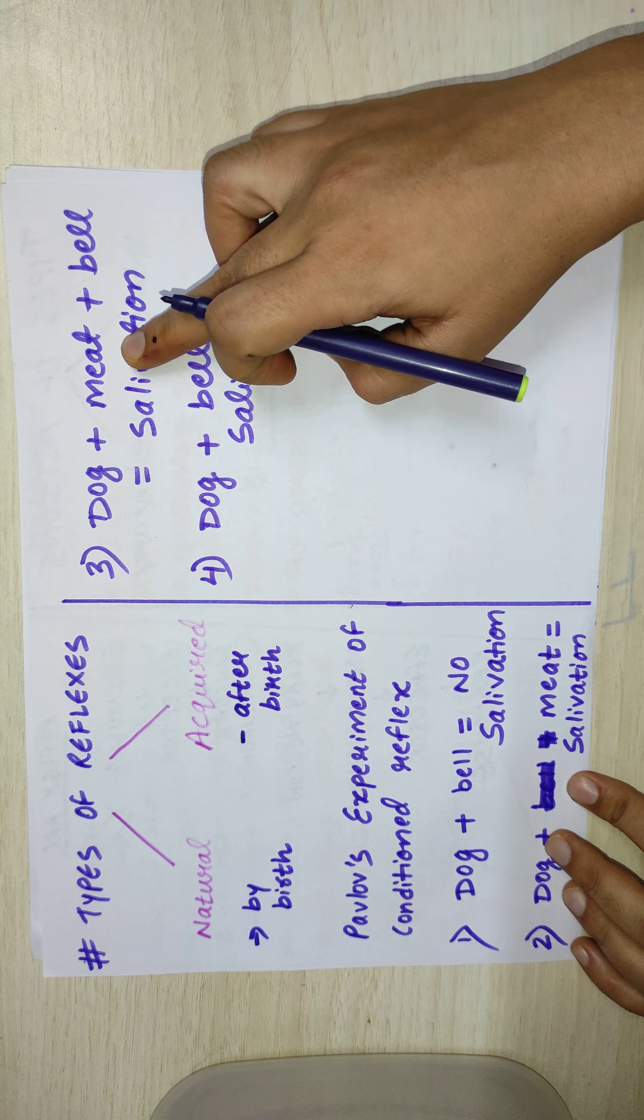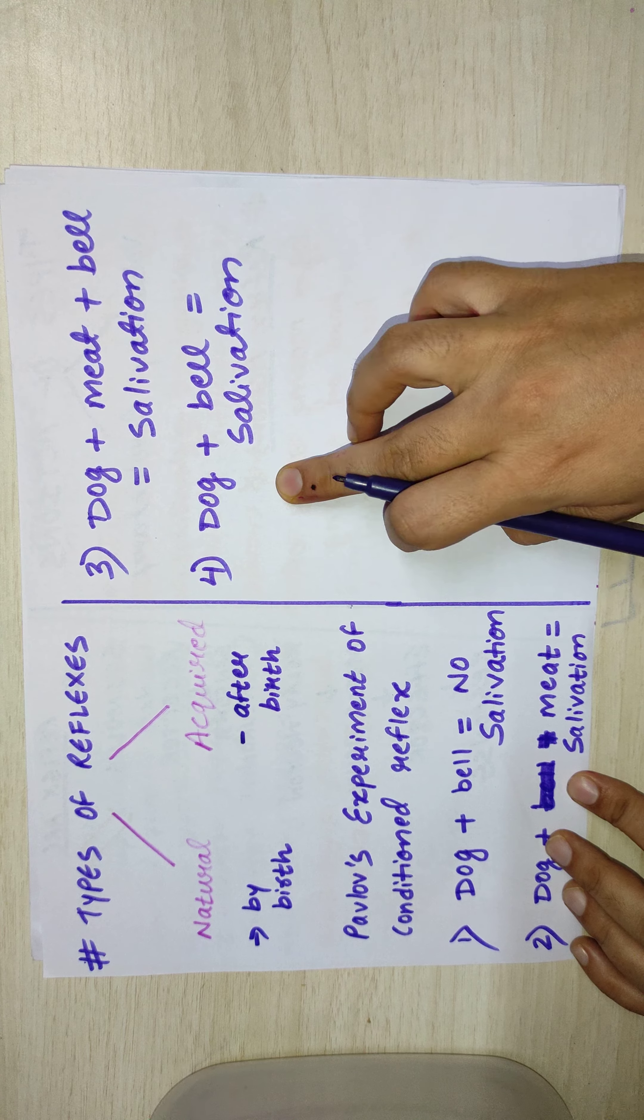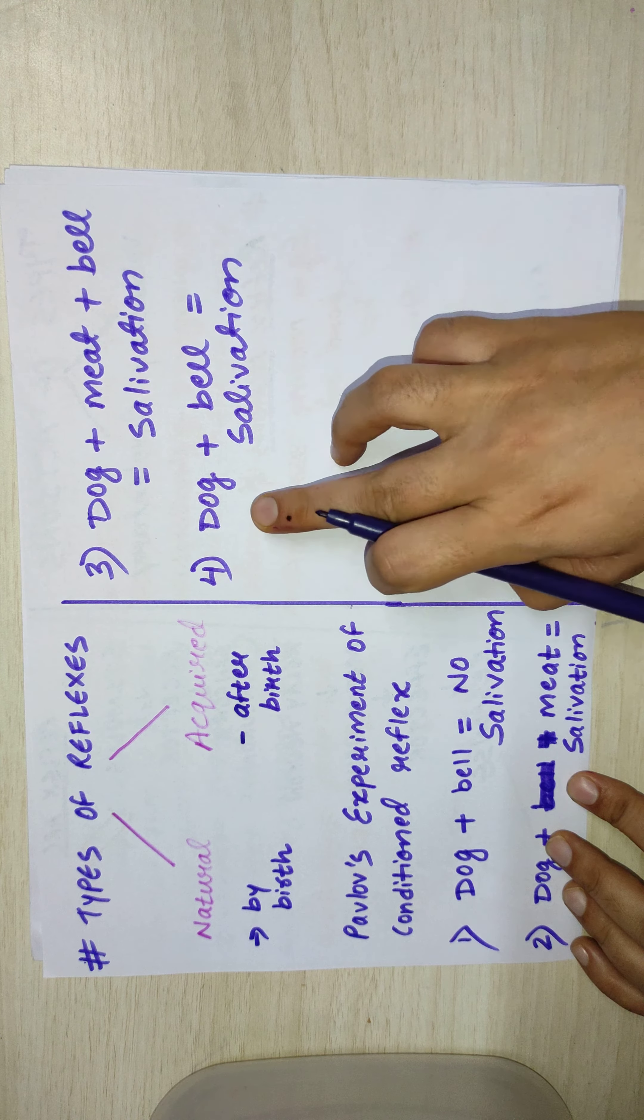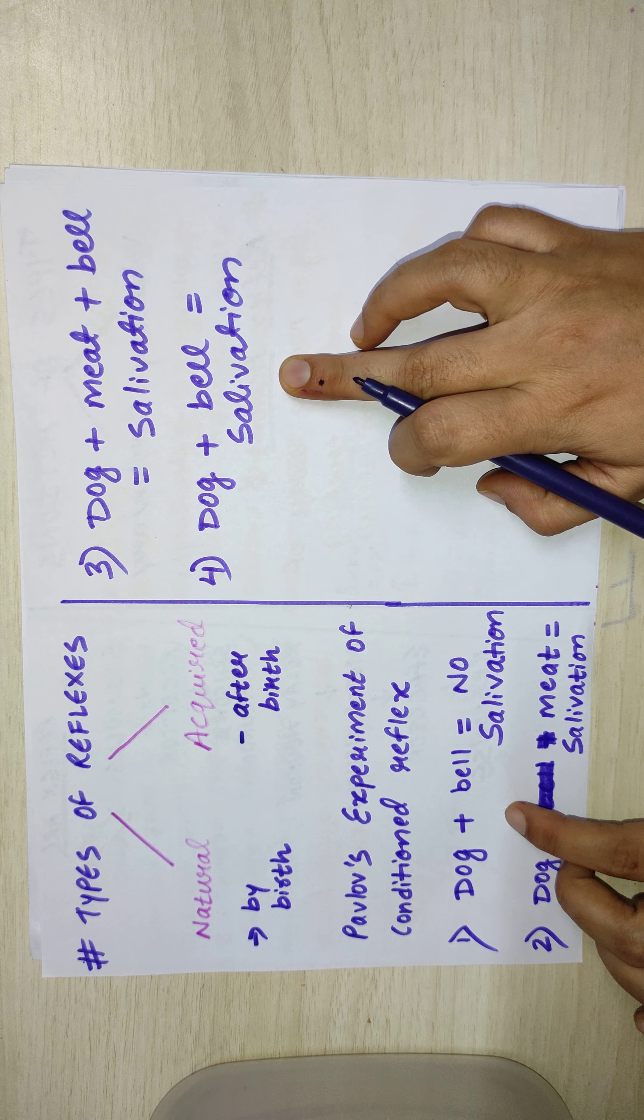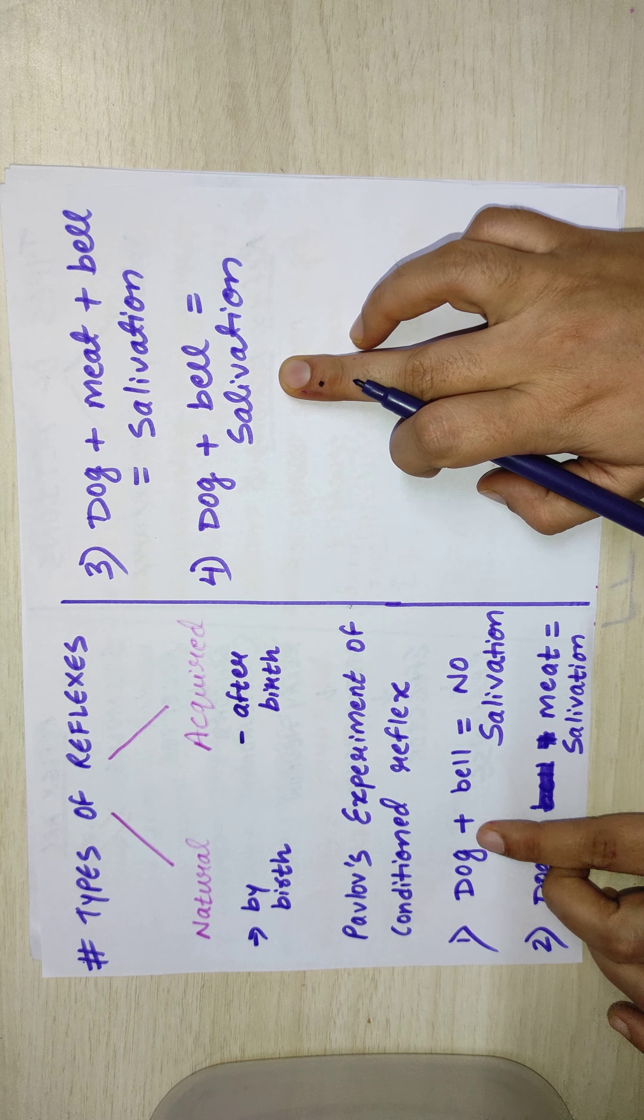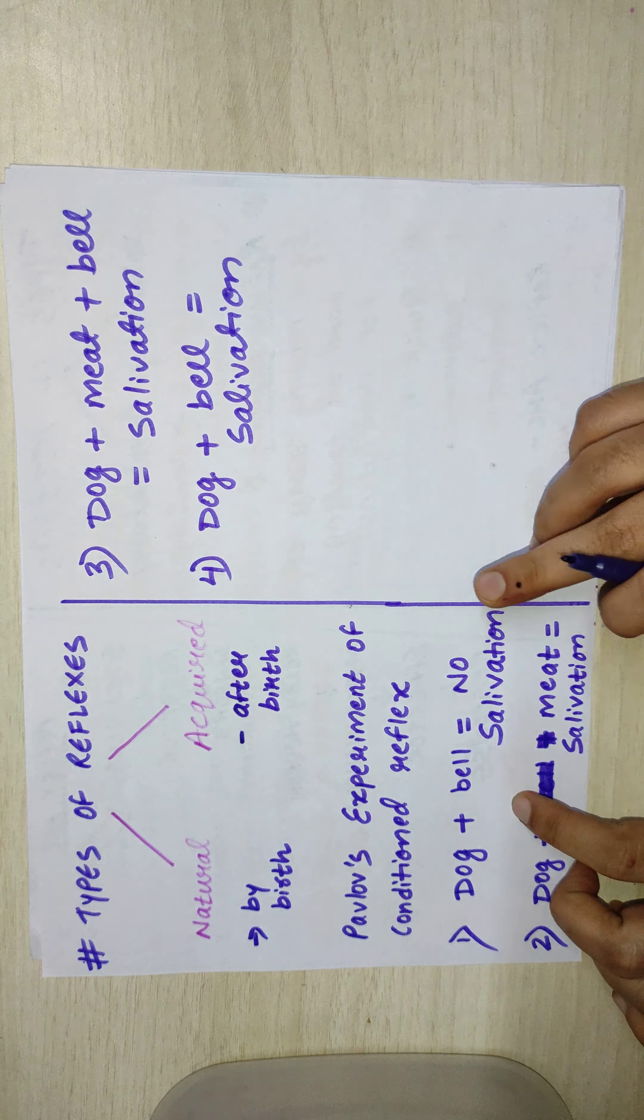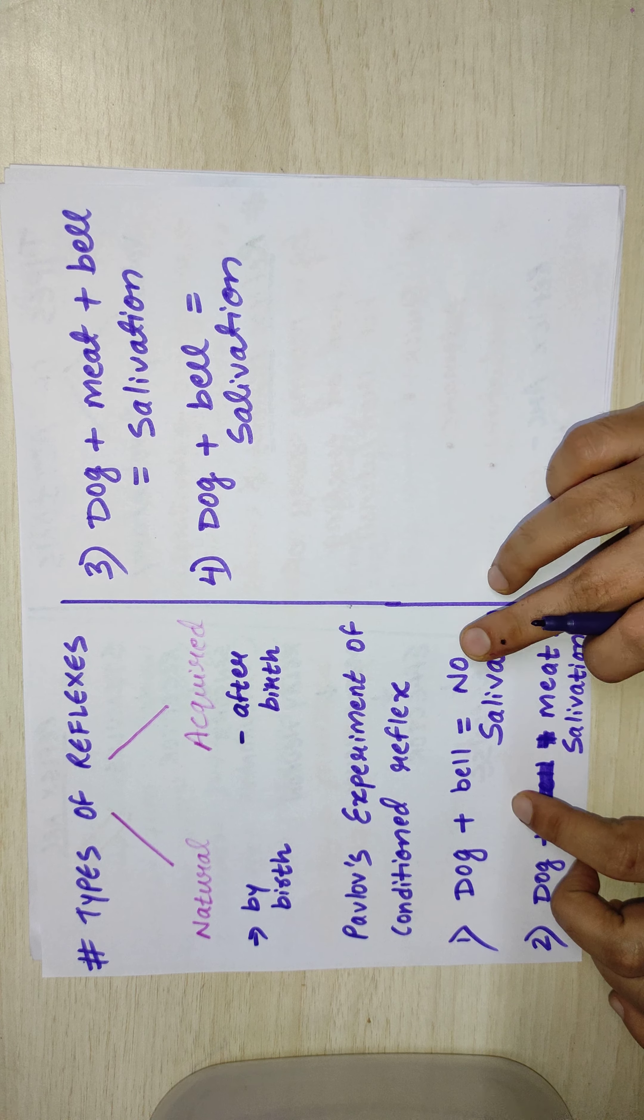So in the fourth case, when the bell was rung, the dog started to salivate. You can see the difference - in the first case, when just the bell was rung near the dog, there was no salivation.